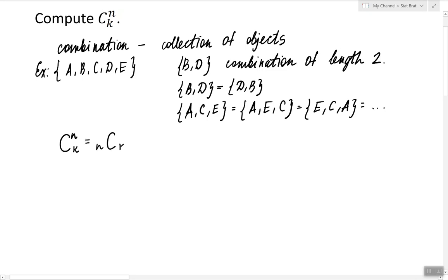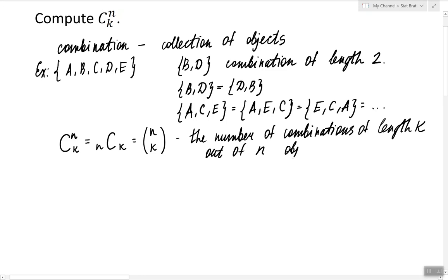So alternatively we can use this and alternatively we can use this. So this is the number of combinations of length k out of n objects.